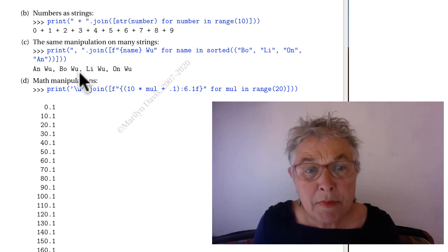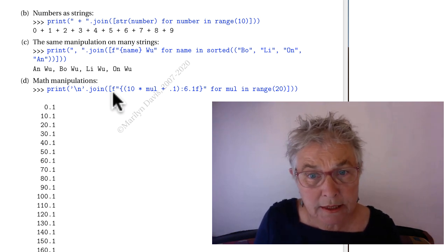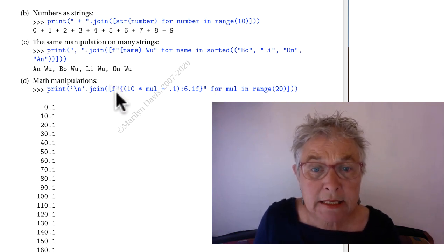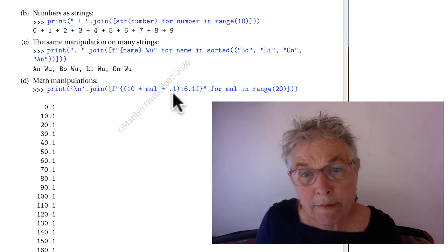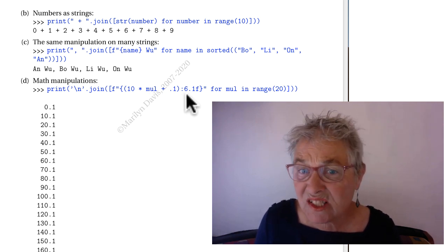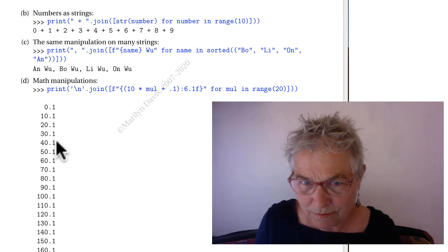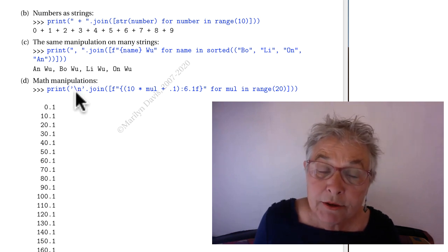For the math manipulations, our for loop is going from 0 to 19 and our pattern is a formatted string. It's 10 times that number plus point 1 and we're formatting it in a field of 6 wide with one place to the right of the decimal, that point 1, and then we're joining those numbers together with a new line character.